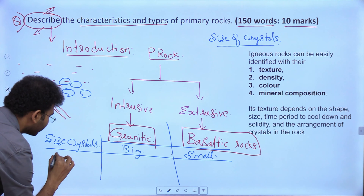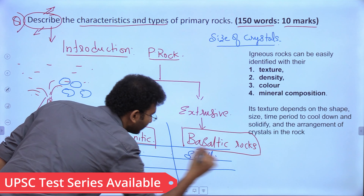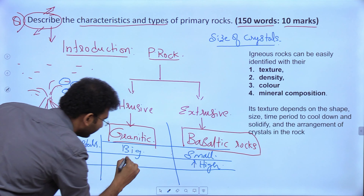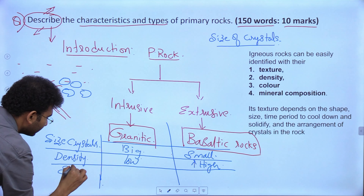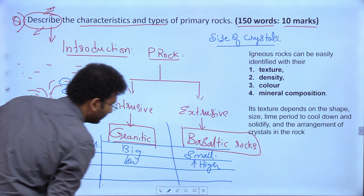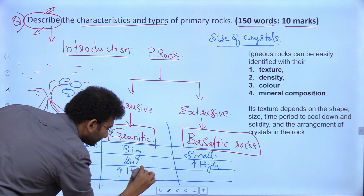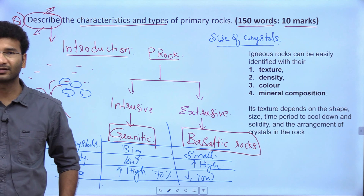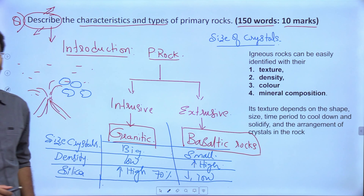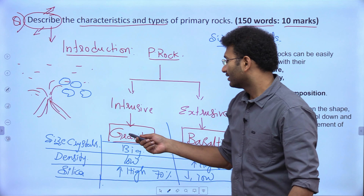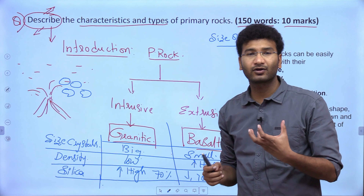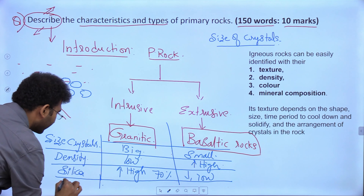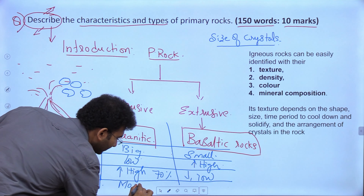In terms of density, basaltic rocks have high density while granitic rocks have low density. Regarding silica composition, granitic rocks have high silica — near about 70% of granitic rocks are formed because of high silica content. The time taken for cooling also decides the nature and characteristics of the rocks; the cooling time for granitic rocks is more compared to basaltic rocks.